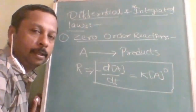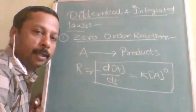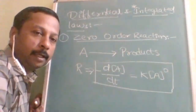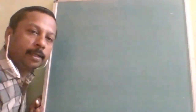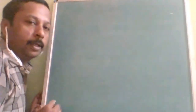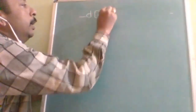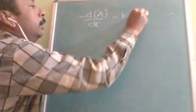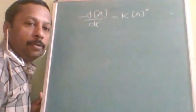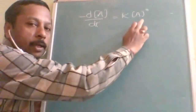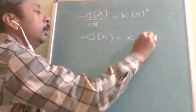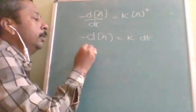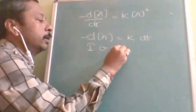Now we are going to write the integrated rate law. To do that, this differential equation must be integrated. Most numerical questions will involve the integrated rate law. Also, this chapter is very graph-based, so the more graphs you understand and revise, the easier this chapter becomes. Starting from: minus dA/dt = k × A⁰, since A⁰ = 1, we get minus dA = k dt.